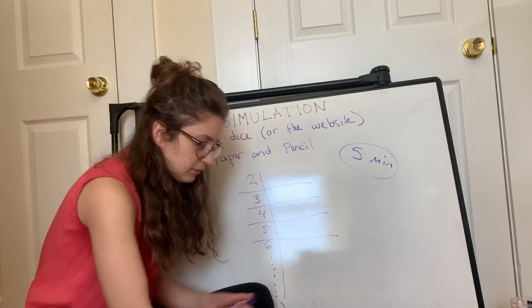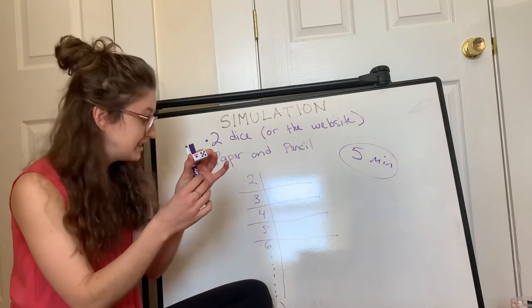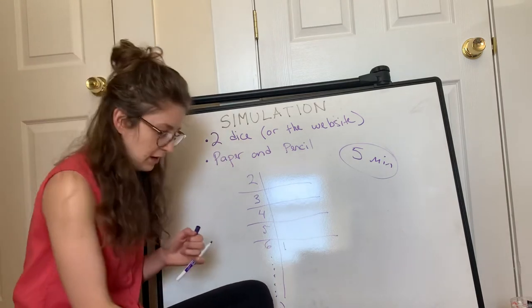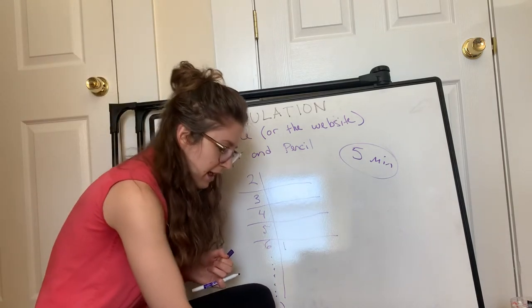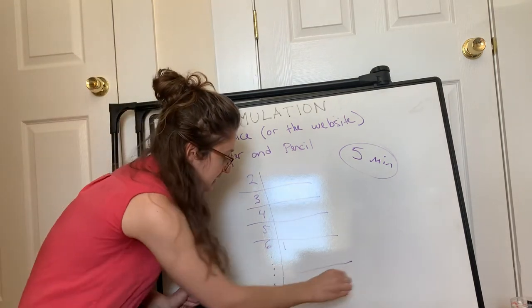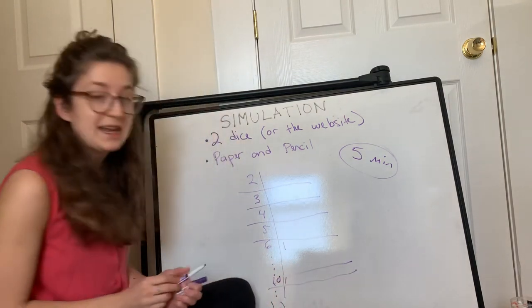I roll. I get a one and a five, which is a six. So I put a tally mark next to the six. I roll again. I get a five and a five, which is ten. So if I had a ten down here, I put a tally mark next to the ten.